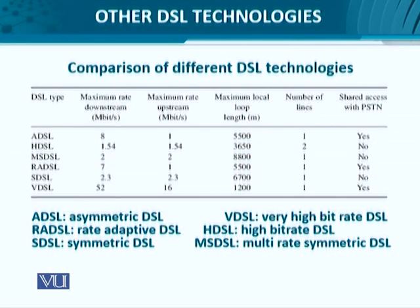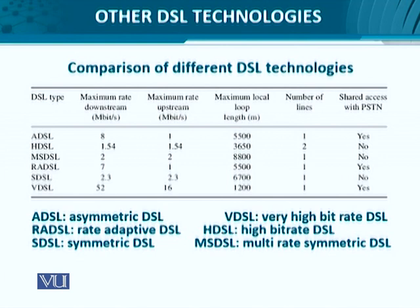In this table, we'll look at the different DSL technologies in terms of their upstream and downstream data rates. Another important aspect is how much distance is permissible from the central office — that is, the maximum length of the local loop or access side. Then we consider the number of lines needed, and whether a certain DSL variant can coexist with the telephone network, which may not necessarily always be the case.